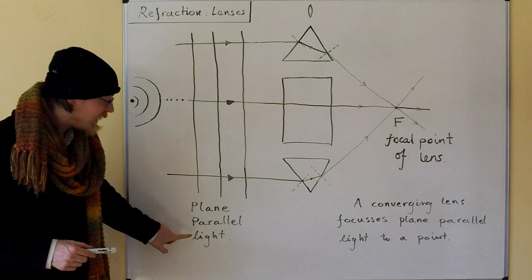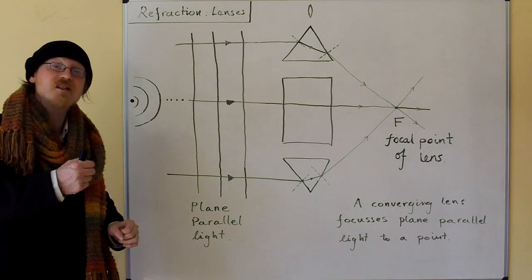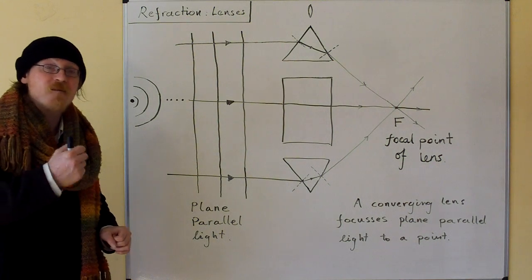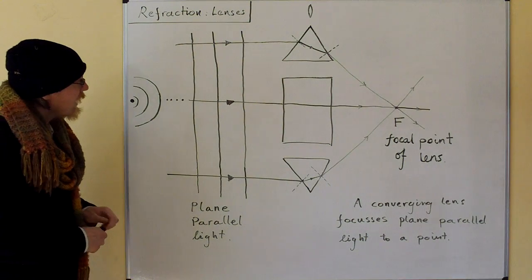So here we have plain parallel light, because the wave fronts, which are curving, are curving so slowly that they appear flat. So all of our waves are going in the same direction.